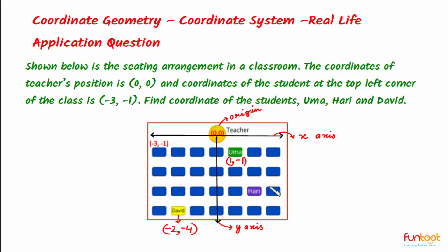Let's take Hari now. Hari is 2 units right of the Y-axis, so the X-coordinate will be 2, and Hari is 3 units downwards from the X-axis, so the Y-coordinate will be -3.